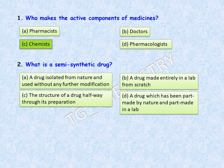Next question: what is a semi-synthetic drug? Option A: a drug isolated from nature and used without any further modification. Option B: a drug made entirely in a lab from scratch. Option C: the structure of a drug halfway through its preparation. Option D: a drug which has been part made by nature and part made in a lab. The correct answer is option D.